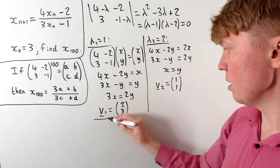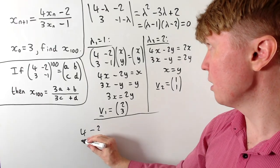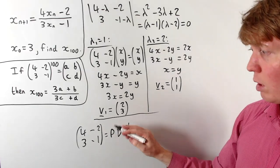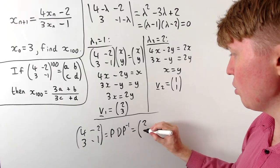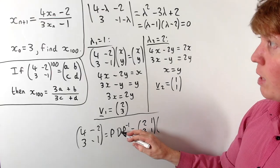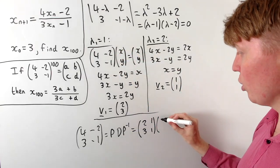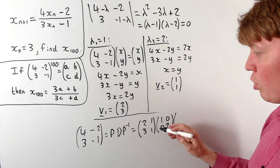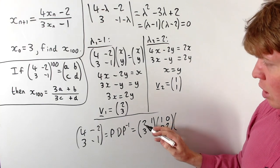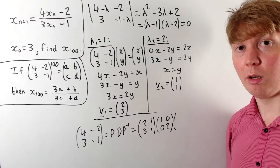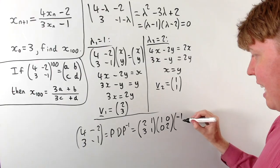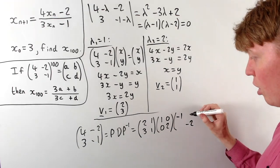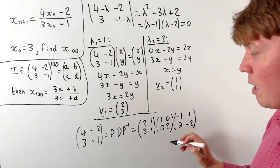With eigenvectors and eigenvalues found, we write the matrix in diagonalised form as P · D · P⁻¹, where P = [2, 1; 3, 1] (columns are eigenvectors), D = [1, 0; 0, 2] (diagonal with eigenvalues). The determinant of P is 2 − 3 = −1, so P⁻¹ = (1/−1)[1, −1; −3, 2] = [−1, 1; 3, −2].